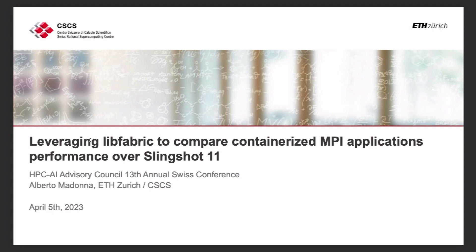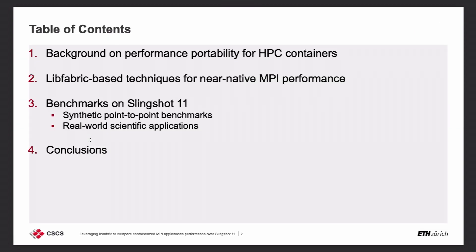Let me elaborate. This work falls into the context of performance portability for containers, an area in which the container team at CSCS and myself have spent a lot of effort and quite a bit of time. I will give you a quick background on what we mean by performance portability for HPC containers, then present libfabric-based techniques for achieving near-native MPI performance with containers, show some benchmarks on Slingshot 11 — both synthetic benchmarks and real-world applications — and then wrap up with some conclusions.